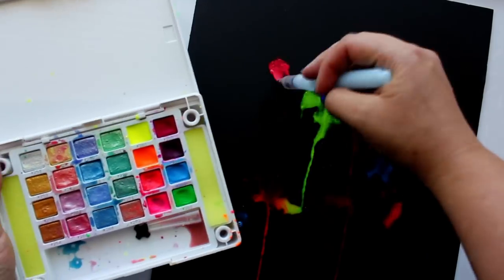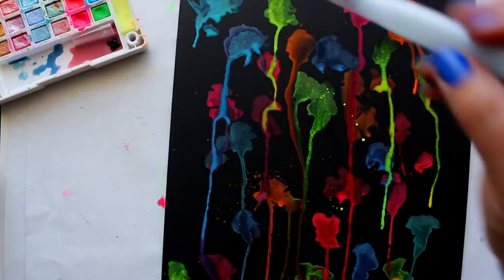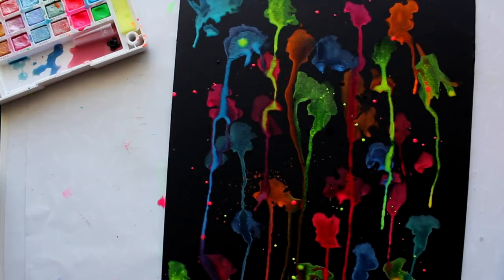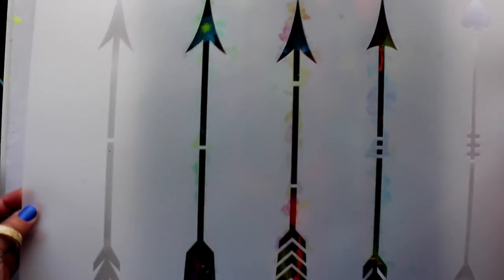Dip the water brush in paint and shake over the surface of the paper to make a spattering of colorful droplets. Allow to dry completely before moving on to the next step.